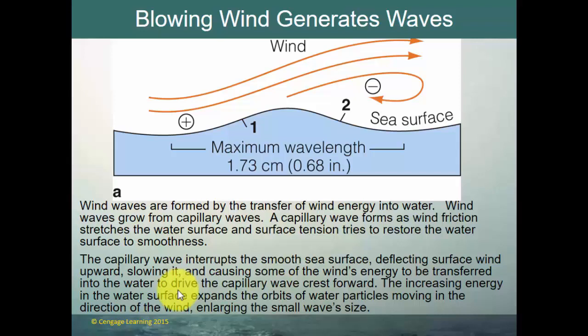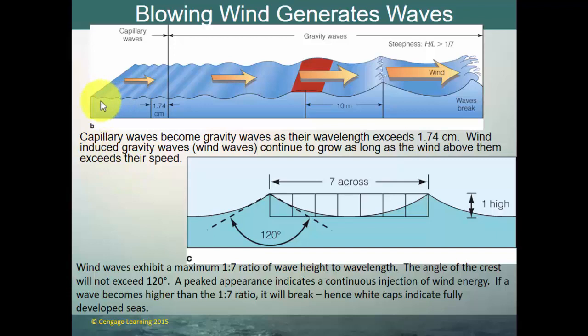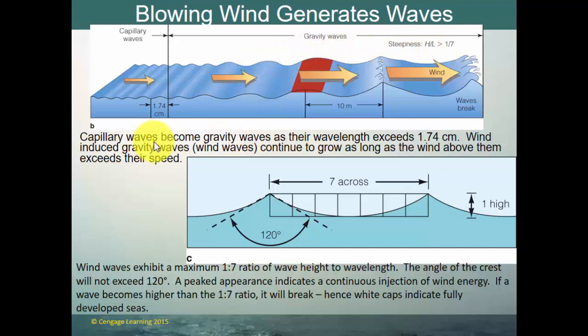The increasing energy in the water surface expands the orbits of water particles moving in the direction of the wind and enlarges the wave size. Once the capillary wave is formed, continued wind blowing into its back expands the orbits and enlarges the wave. Capillary waves become gravity waves as their wavelength exceeds 1.74 centimeters. Wind-induced gravity waves continue to grow as long as the wind above them exceeds their speed.